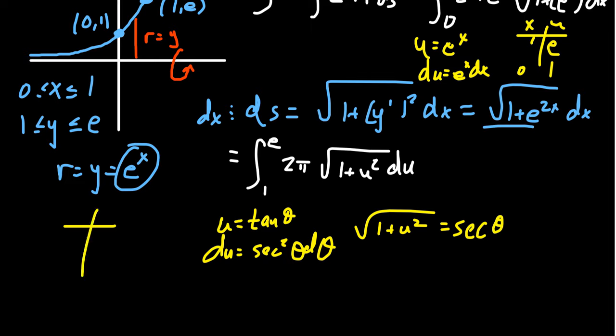As we switch the bounds one more time, as you go from u to θ, when u equals 1, you want tangent. When is tangent equal to 1? That happens at π/4. When u equals e, you're going to get arctangent of e, which I'm just going to call that α for short as we go forward here.